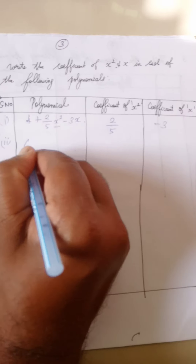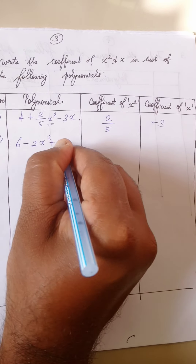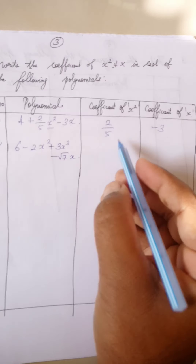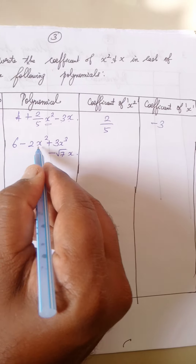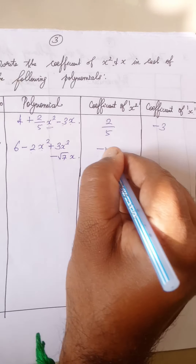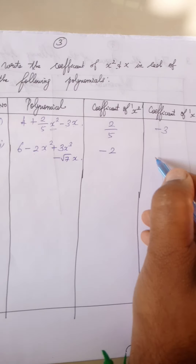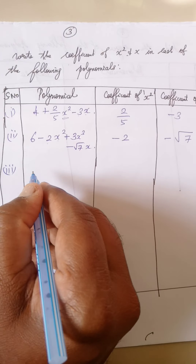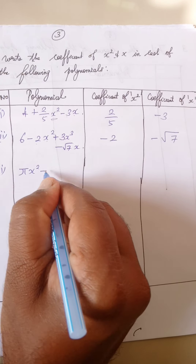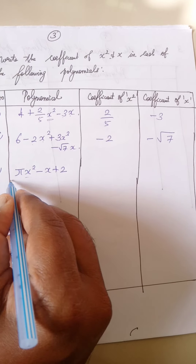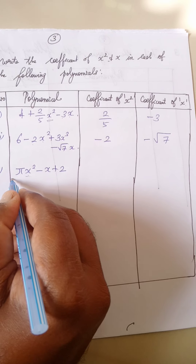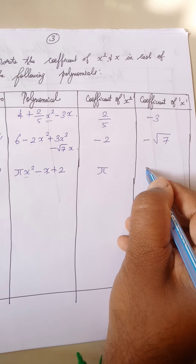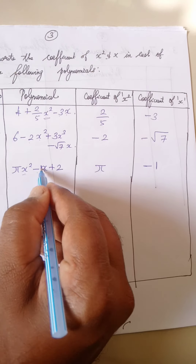Second one: 6 minus 2x square plus 3x cube minus root 7 x. Coefficient of x square is minus 2. Coefficient of x is minus root 7. Third one: pi x square minus x plus 2. Coefficient of x square is pi. Coefficient of x is minus 1, because there is 1 x with a minus sign.